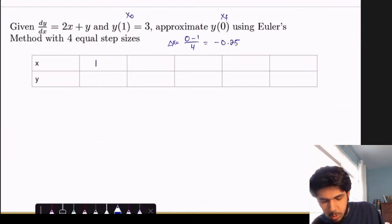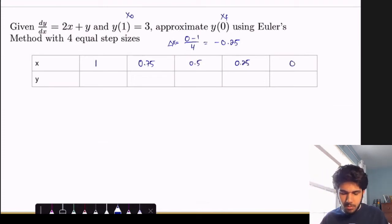So we'll start filling out the table. We'll start at x equals 1, then we go down to 0.75, then 0.5, 0.25, until we finally reach 0. We're given y of 1 equals 3, so we can fill that out. Now we just have to use that equation to get our next point.